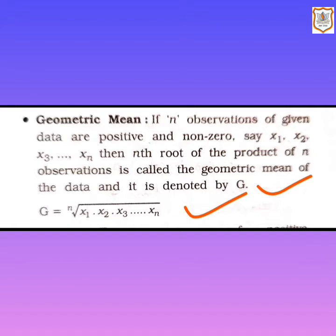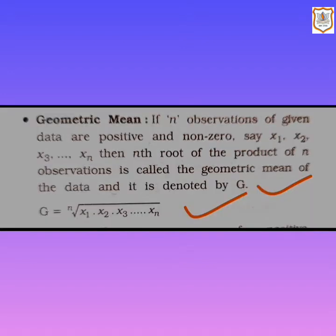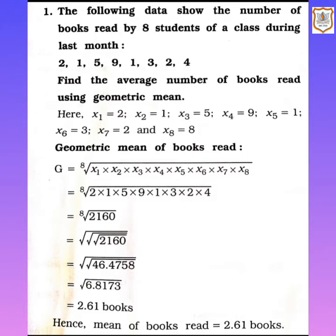Let's solve the sums from exercise 3.3. Let's begin with sum number 1. The following data shows the number of books read by 8 students of a class during the last month: 2, 1, 5, 9, 1, 3, 2, 4. So here there are 8 observations and we have to find the average number of books using geometric mean.